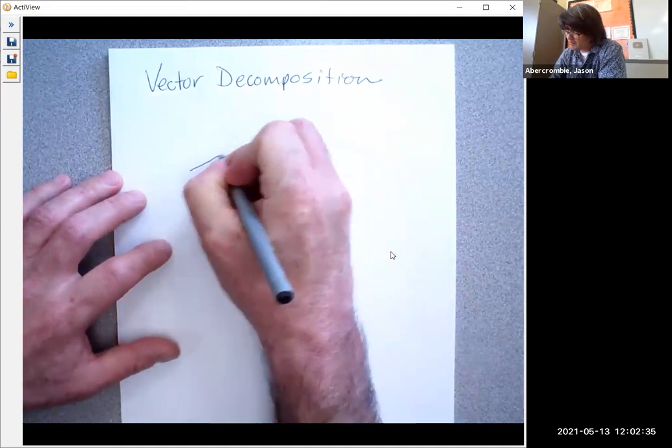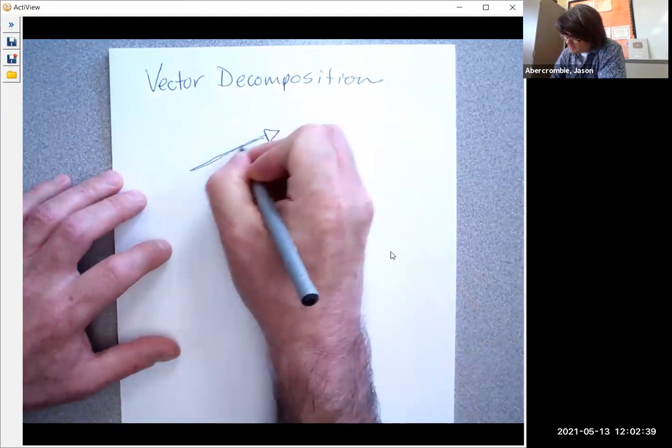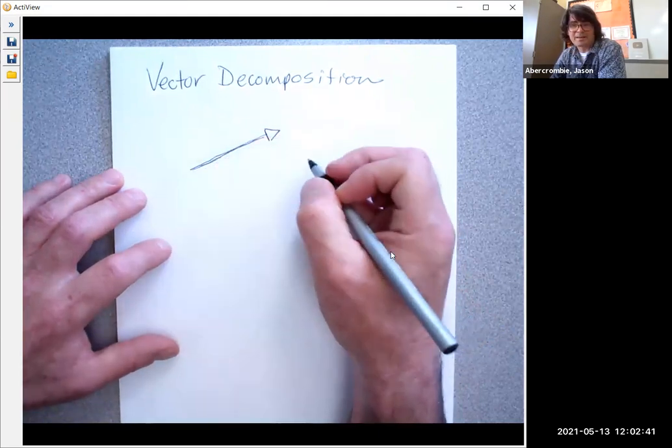First of all, a vector is drawn like an arrow and encompasses a direction and a magnitude.